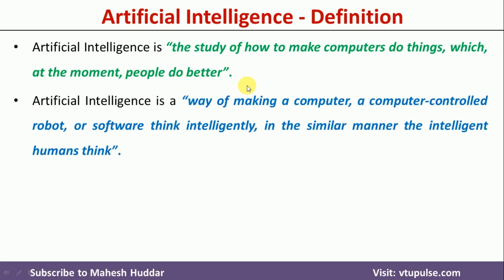Similarly, we have one more definition: Artificial Intelligence is the way of making a computer, a computer-controlled robot, or software think intelligently in a similar manner to how an intelligent human thinks. Again, it says the same thing — we have to incorporate human intelligence into a computer, a computer-controlled robot, or software so that it can think intelligently.